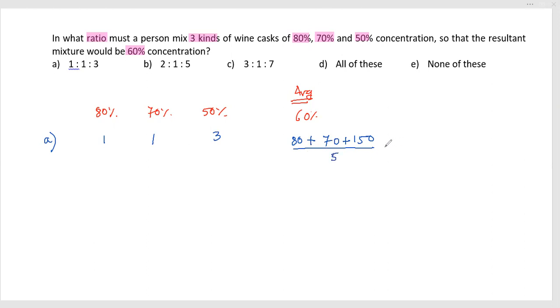So it is 150, 150, 300 divided by 5, which equals 60%. So this ratio 1:1:3 is satisfying. Now if I go with option B,